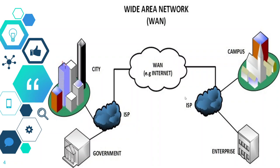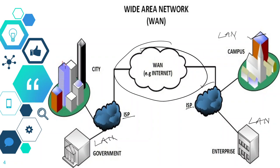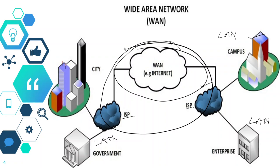Here we can see in this picture again that we have a campus LAN, another LAN, and a LAN in a government building. All of these are connected to an Internet Service Provider (ISP) and to each other. This whole arrangement, including the ISPs, is known as a WAN. In order to communicate between different LANs you need a WAN — this huge network that spans multiple cities or even countries.